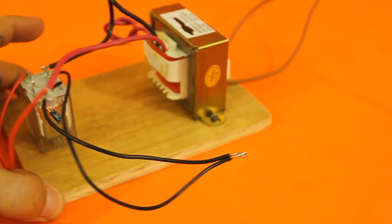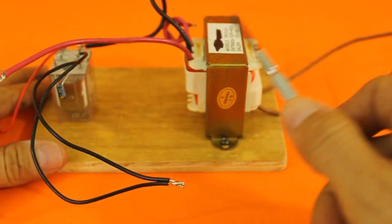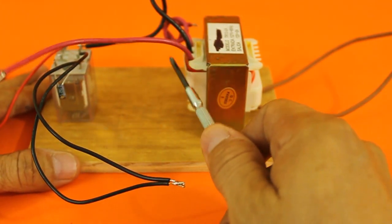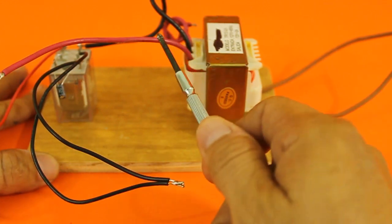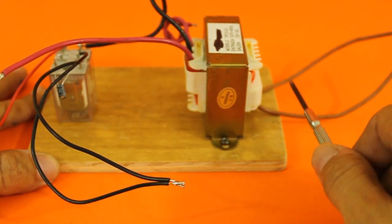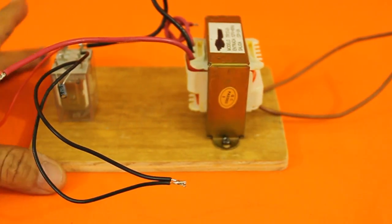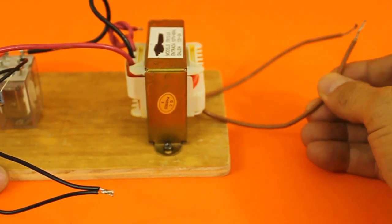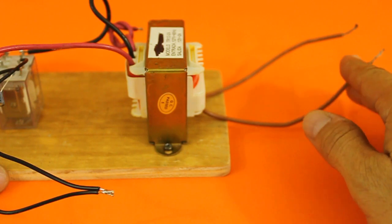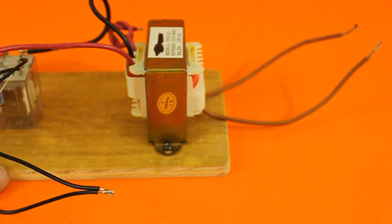Now our transformer is connected in reverse. This is the secondary and the primary. So the voltage here will be amplified in the primary. So here we will obtain alternating current of approximately 120 volts.